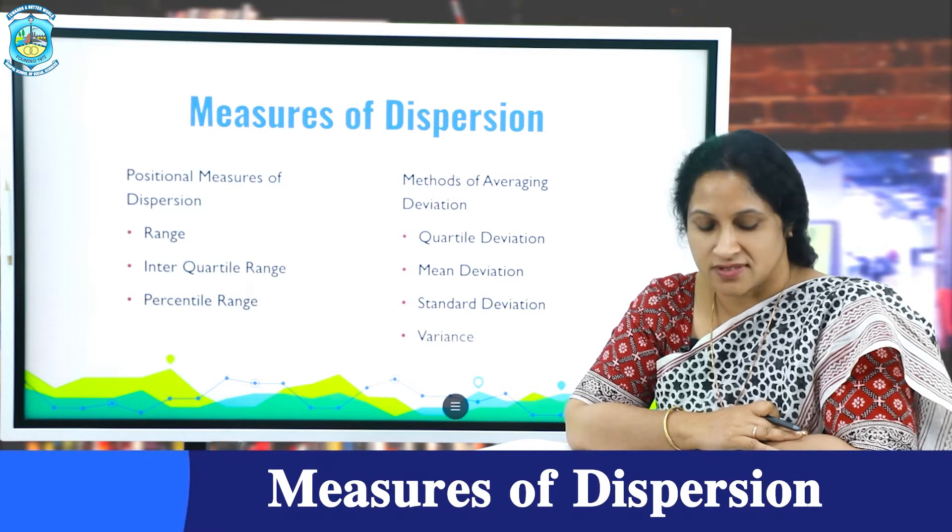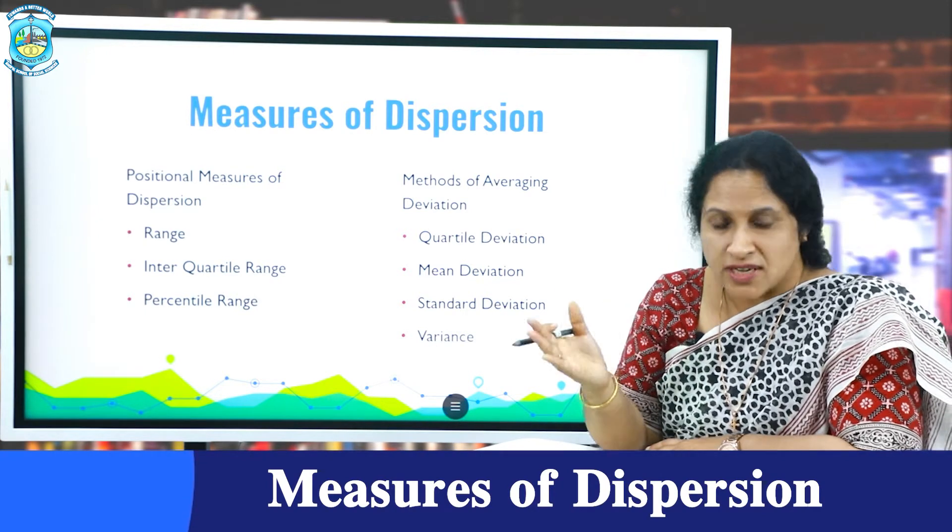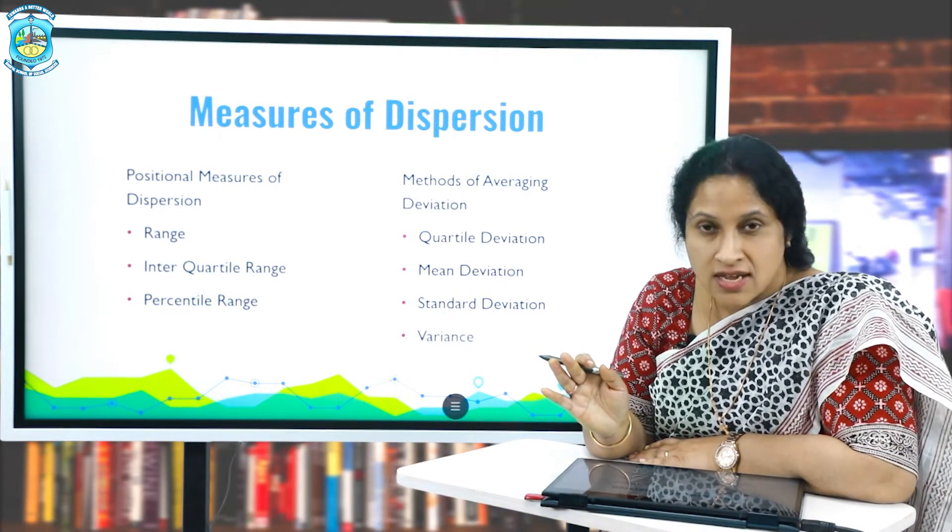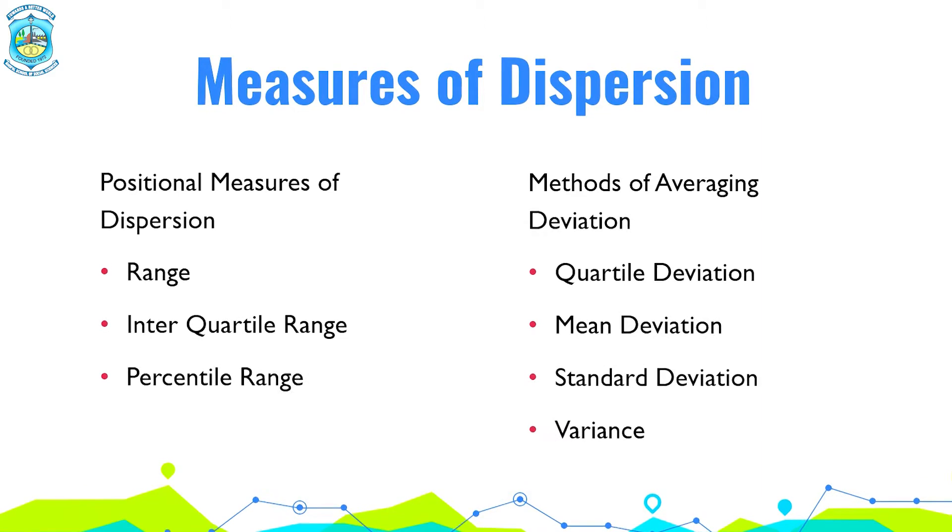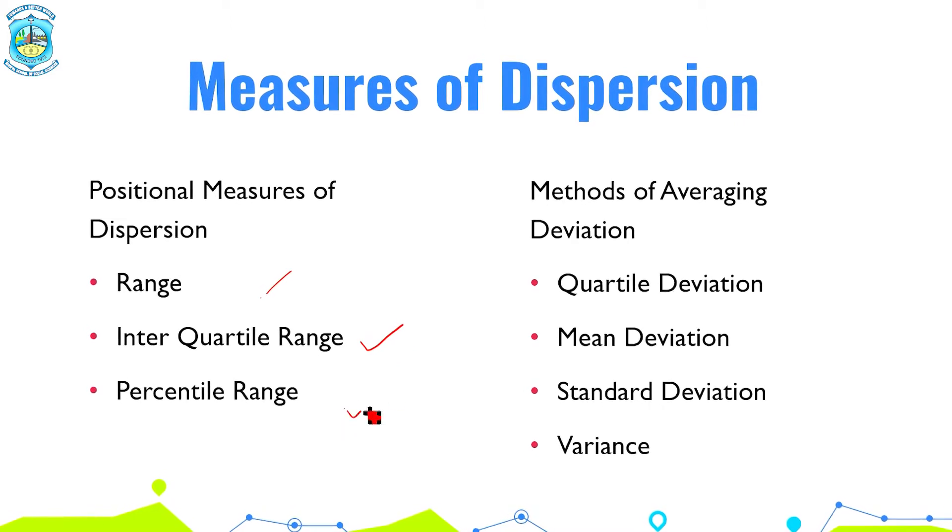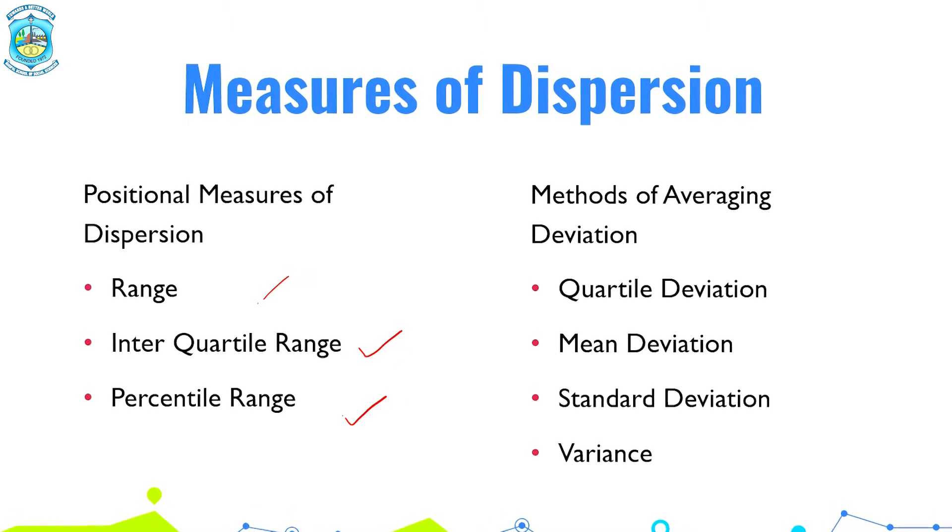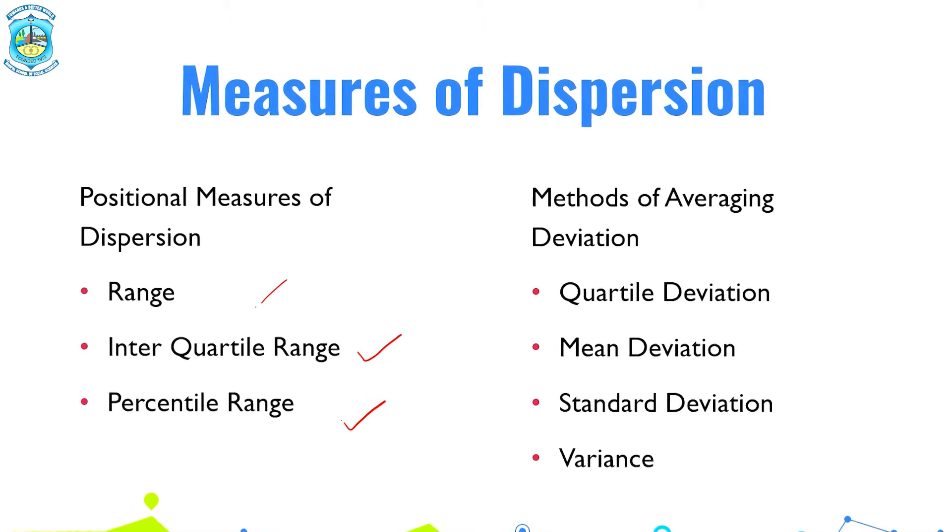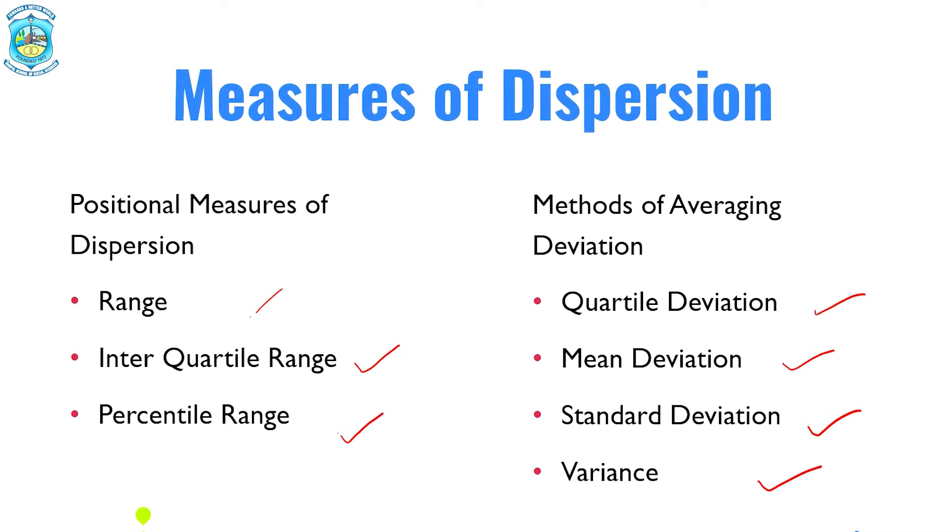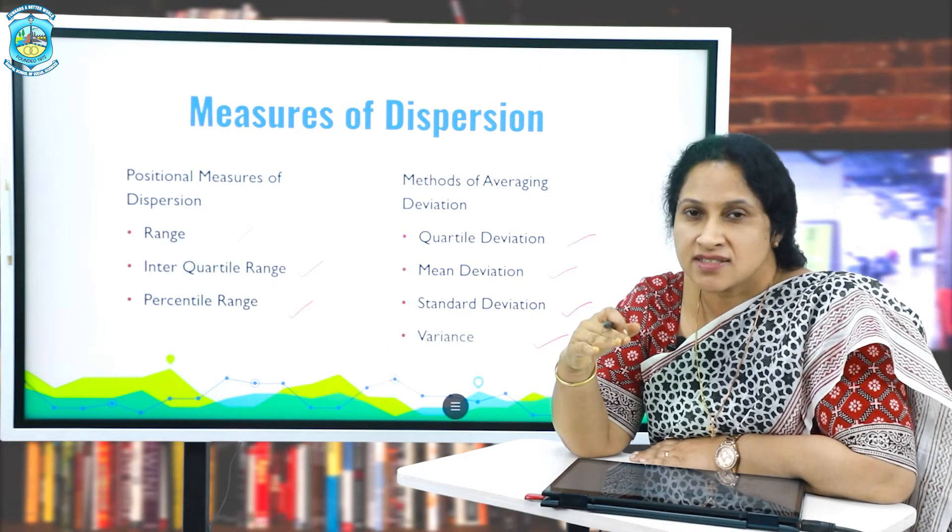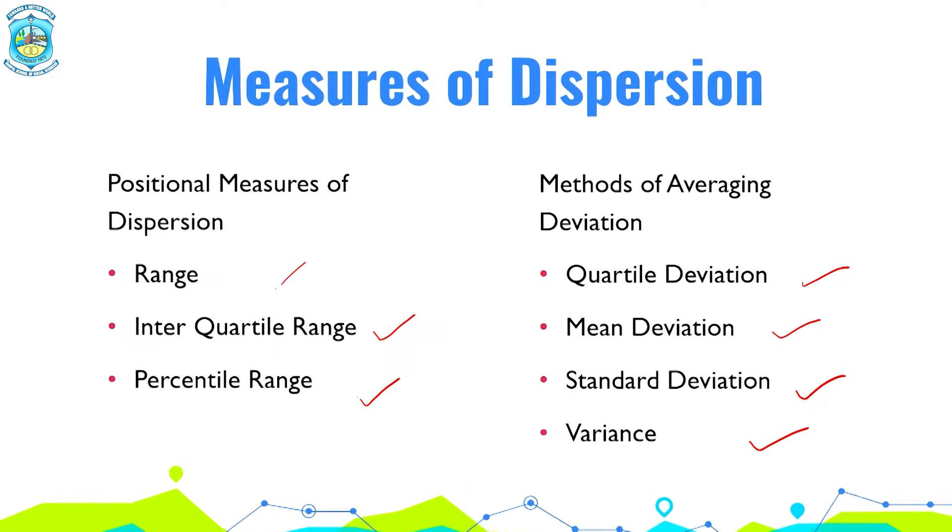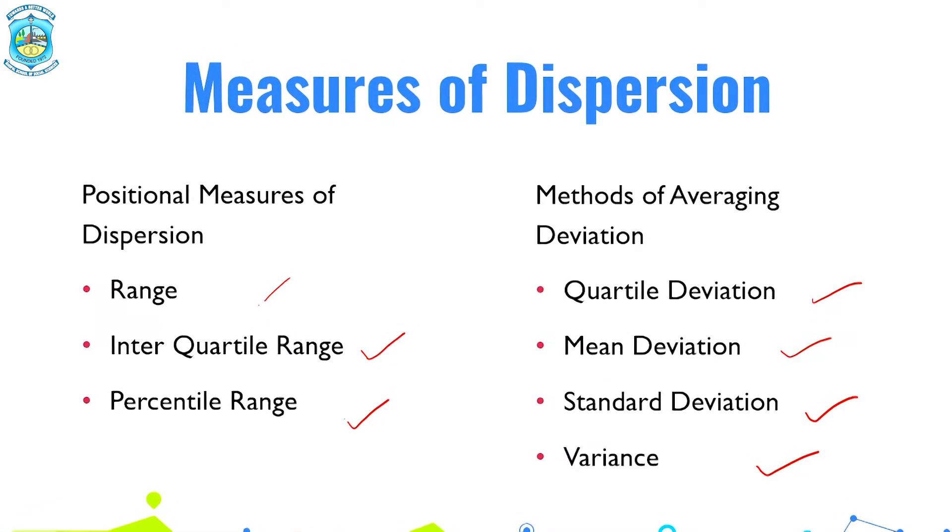So what are the measures of dispersion? There are two types basically. The positional measures of dispersion and the methods of averaging deviation. Under the positional measures of dispersion, there are three categories: range, interquartile range and the percentile range. And under the methods of averaging deviation, we have the quartile deviation, mean deviation, standard deviation and the variance. In the subsequent modules, we would be discussing on each one of it. And for today, we would be discussing basically on range and interquartile range.